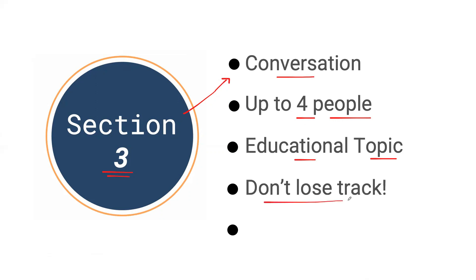Common examples for section three topics include enrolling in university courses, talking about a university assignment, or asking a career counselor for advice — all educational in nature. Remember that difficulty increases with each section, so section one is considered the easiest and section four the most difficult. We're almost at section four, so things get complicated and you don't want to lose track.